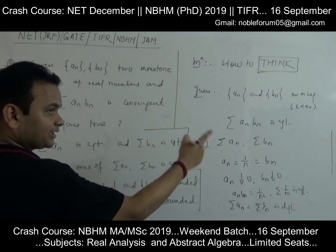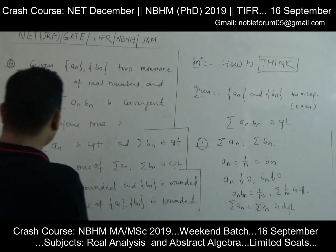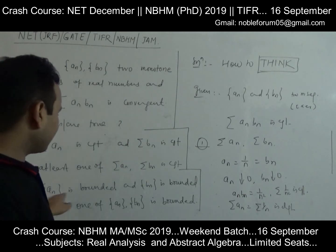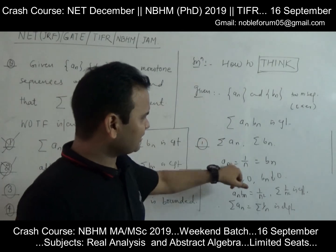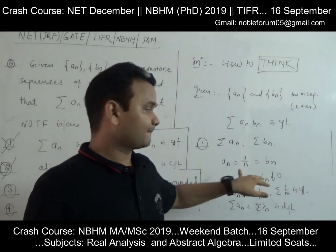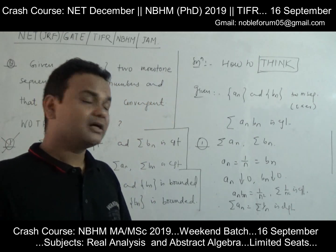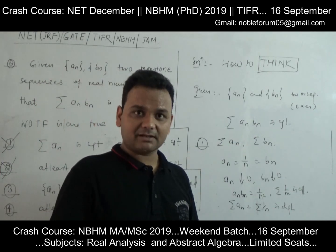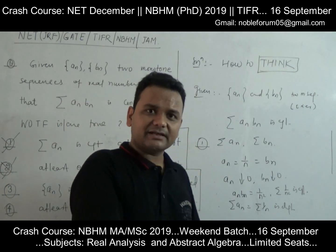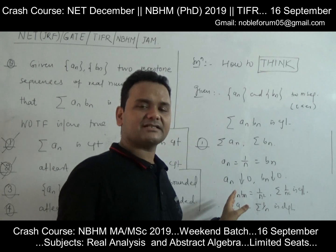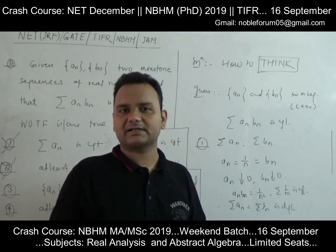Now, in our example, a_n = 1/n and b_n = 1/n are both bounded sequences. So option C (both sequences bounded) appears to hold here. But does it always hold? We need to check if it's always true or find a counterexample. Let's look for an unbounded counterexample.